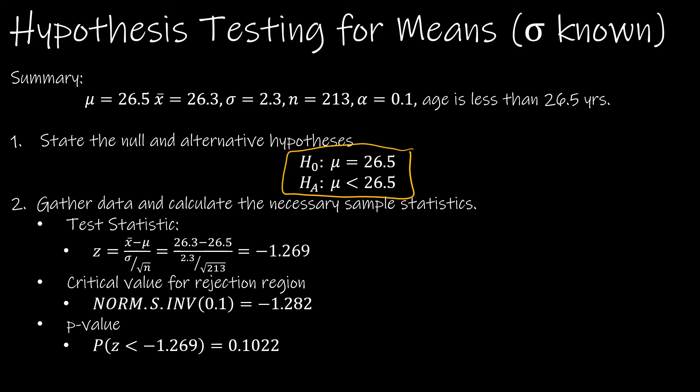Remember that this is a left-tailed test, and we call it left-tailed because it's less than. So if I were thinking about my picture, I know that in the left tail, I need that to be alpha, which in this case is 0.1. So in Excel, because Excel always calculates to the left, this one's really easy. I'm just going to do norm S inverse of 0.1 to find that critical value, and that's negative 1.282.